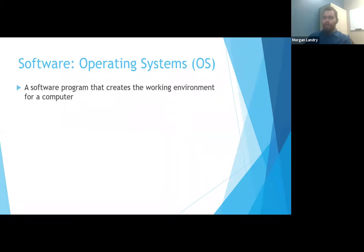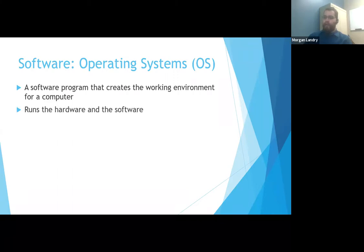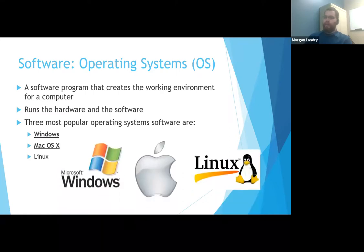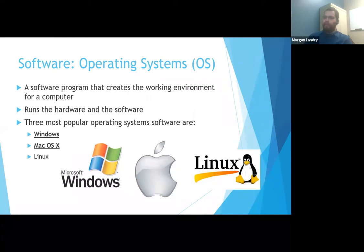The first software everyone will see when they turn on the computer is their operating system — this is the interface for everything on a computer. Every computer has to have one, or it's generally not going to work. It runs your hardware and software, basically organizing what the hardware does to work with the software. The three most popular are Windows, Mac, and Linux. Windows is controlled by Microsoft, Mac is by Apple, and Linux is a freeware version mostly used by software developers, programmers, and IT professionals.